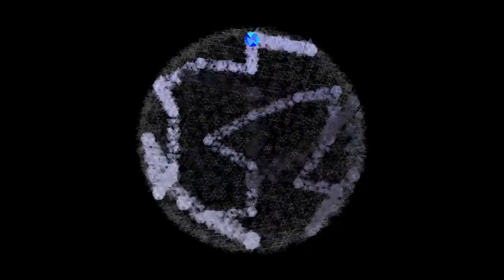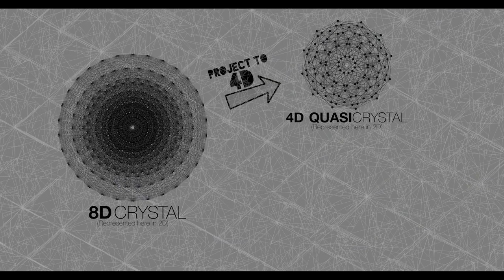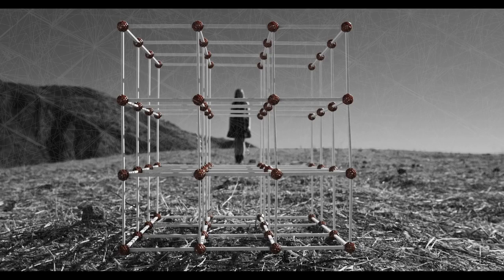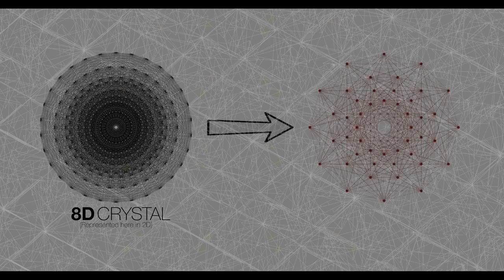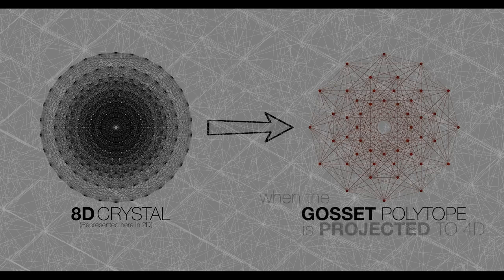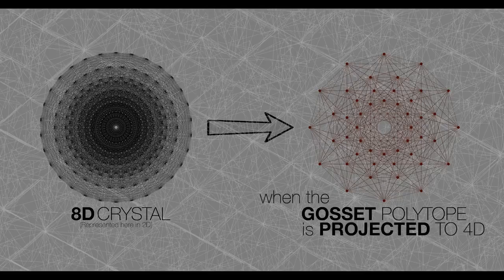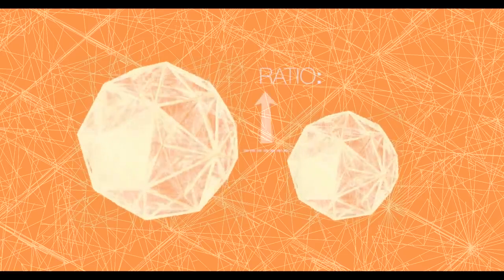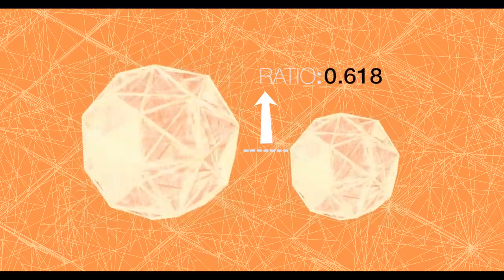To generate that 3D quasicrystal — the substructure of the pixelated fabric of reality — we project this 8D crystal to 4D, and then convert that to 3D. Just like the basic cell shape of the 3D cubic lattice is the cube, the cell shape of the E8 lattice is an 8D shape with 240 vertices called the Gossett polytope. When the Gossett polytope is projected to 4D, it becomes two identical shapes of different sizes. The ratio of their sizes is 0.618 — also known as the Golden Ratio.